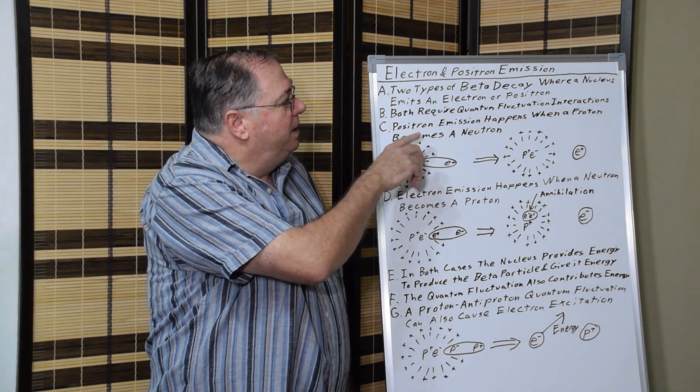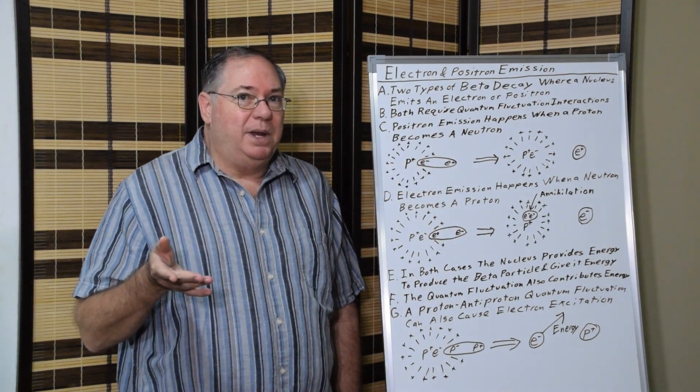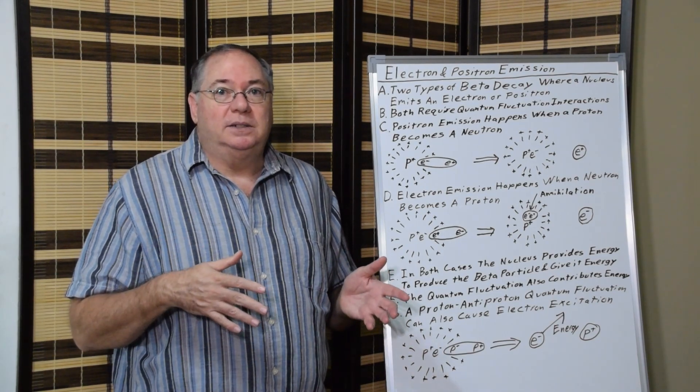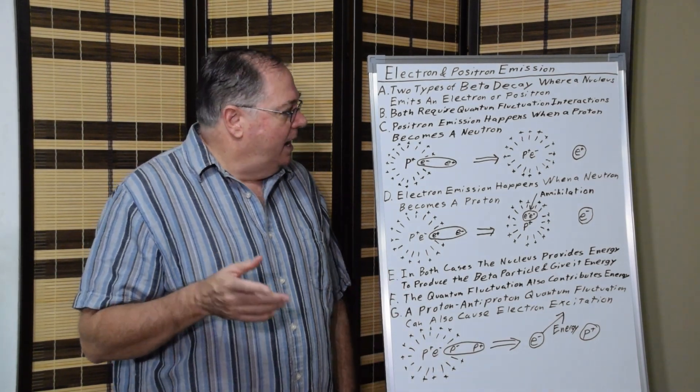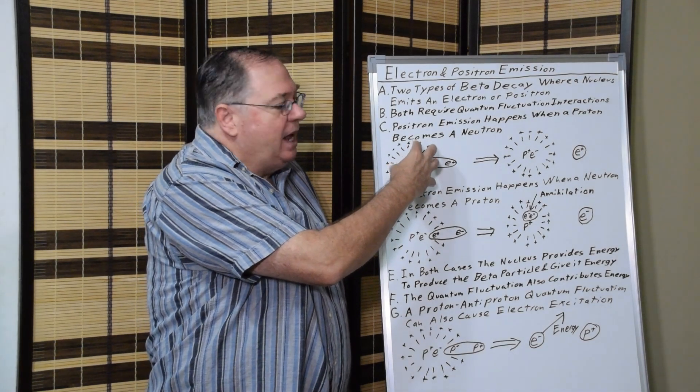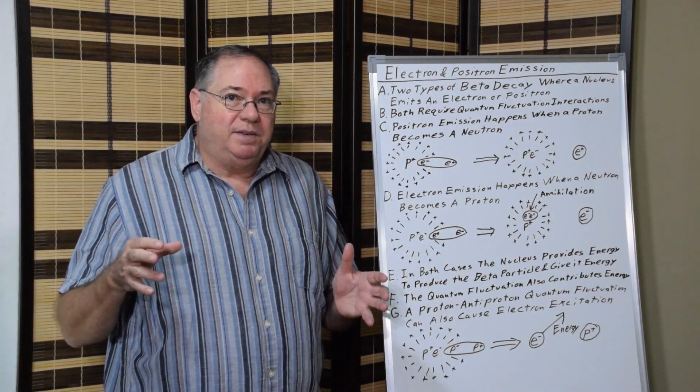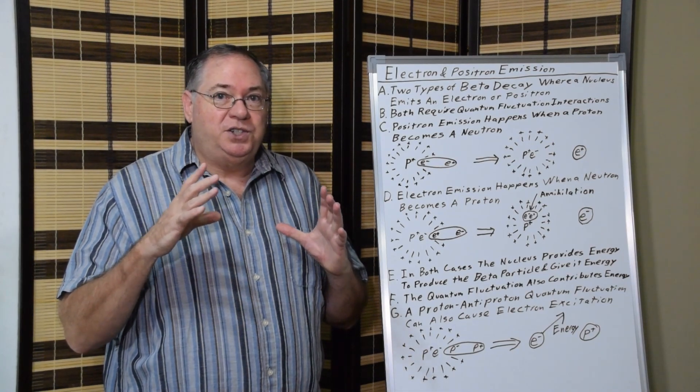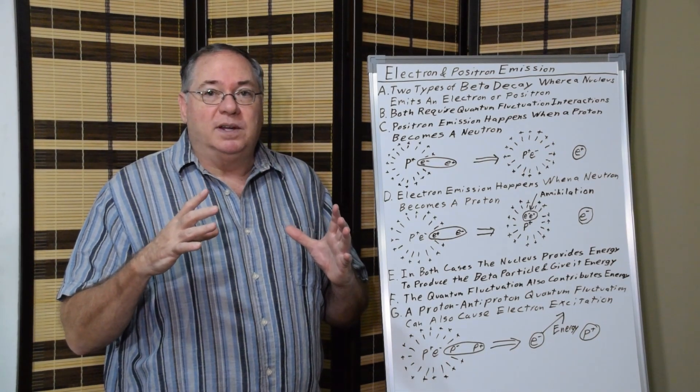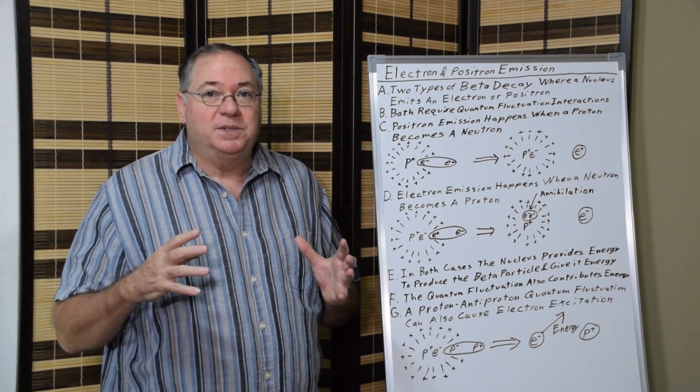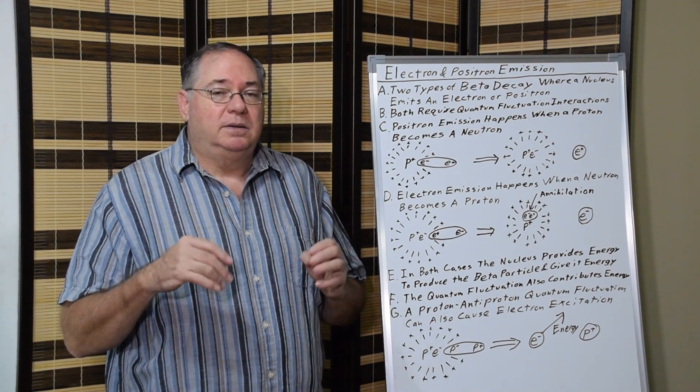When a positron is emitted, you end up converting a proton to a neutron. The way that happens is we have a proton, and as I've discussed in previous videos, a proton has a shell of quantum fluctuations around it that causes scattering. We know that from scattering experiments.